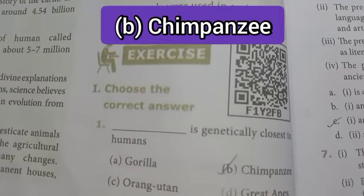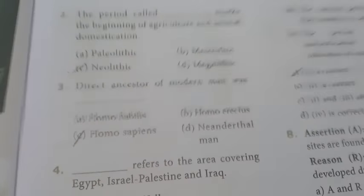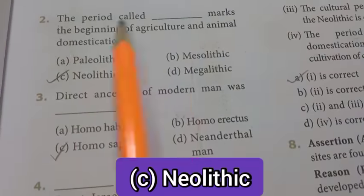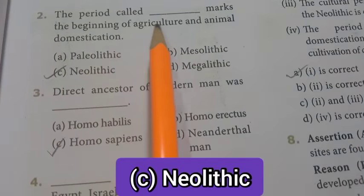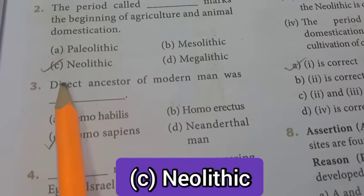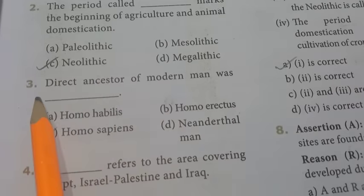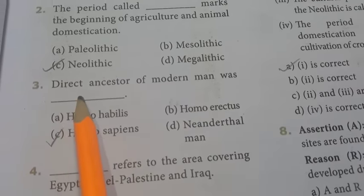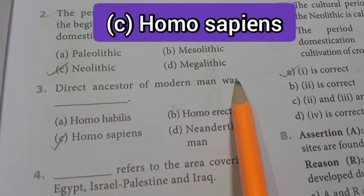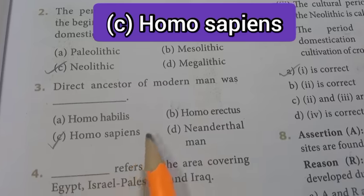Second one: the period called dash marks the beginning of agriculture and animal domestication. Answer is B, option Neolithic. Third one: the answer of modern humans is option C, Homo sapiens.